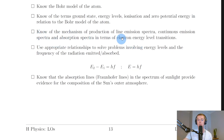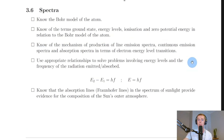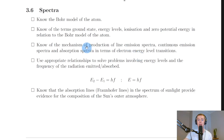You need to know the mechanism of production of line emission spectra, continuous emission spectra, and absorption spectra in terms of electron energy level transitions. We draw the energy levels as horizontal lines in a ladder shape. Line emission spectra are produced when electrons drop down energy levels, releasing photons. Absorption spectra occur when atoms absorb photons, causing electrons to move up energy levels.